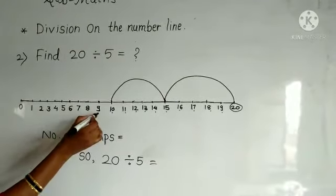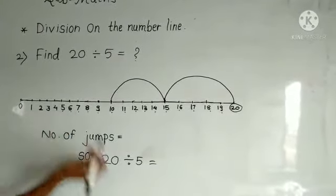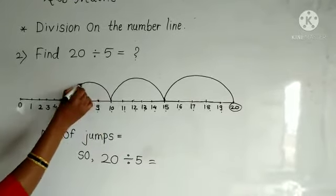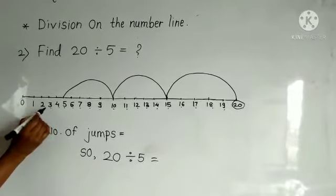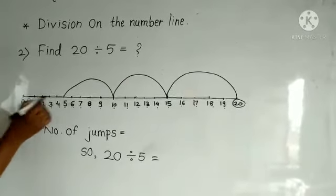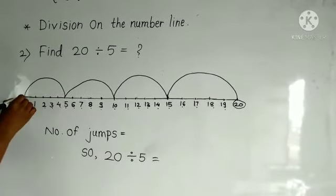Next, 1, 2, 3, 4, 5, jump on the number 5. Next, 1, 2, 3, 4, 5, jump on the number 0.